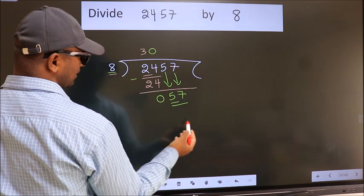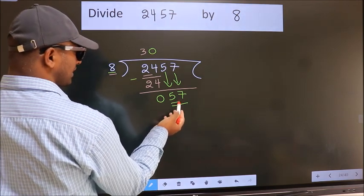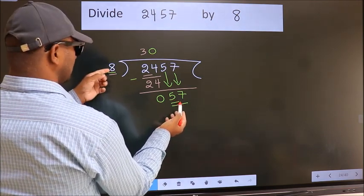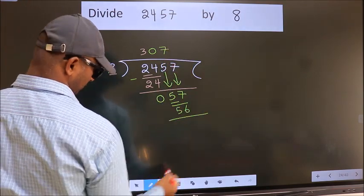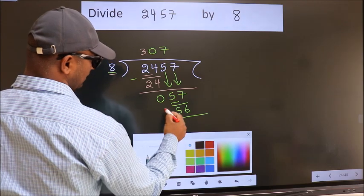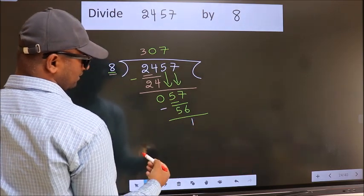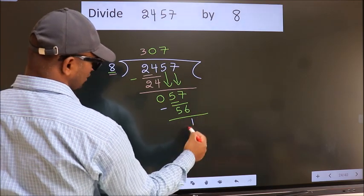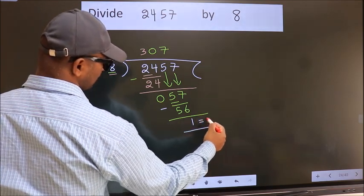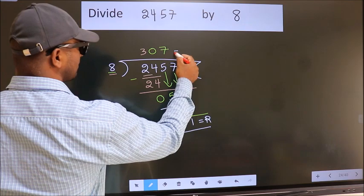So 57. A number close to 57 in 8 table is 8 sevens 56. Now we subtract. We get 1. No more numbers to bring it down. So we stop here. This is our remainder. This is our quotient.